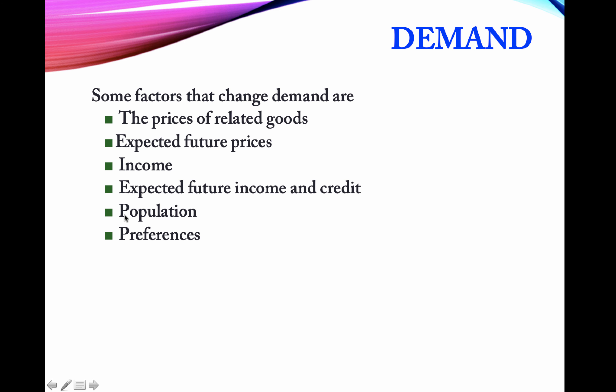Population increase is straightforward: market demand is an aggregate of all individual demands, so an increase in population means more individual demands are added to the market demand, causing market demand to shift to the right. We also have preferences as a factor.